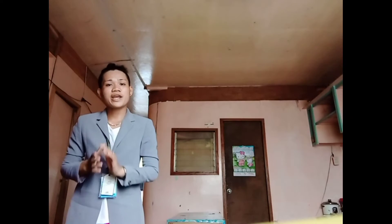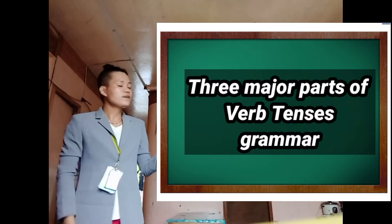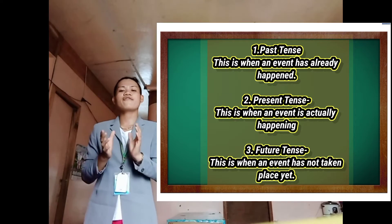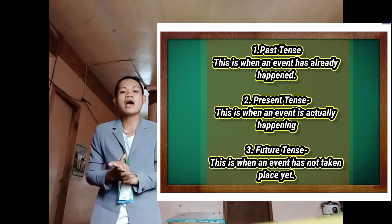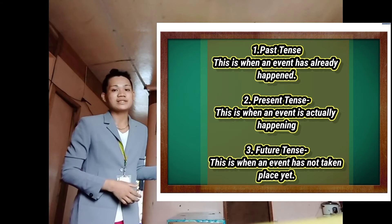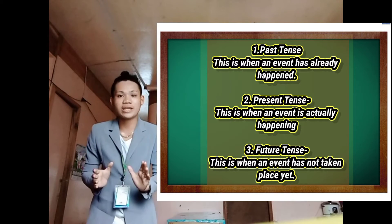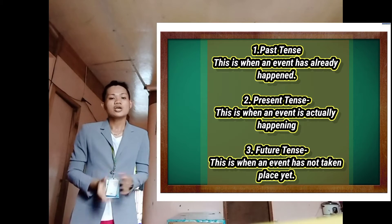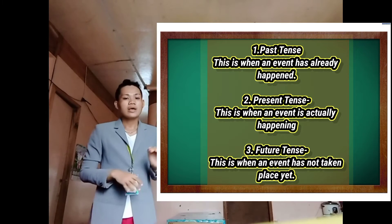Okay class, here are the three major parts of verb tenses. The first one is the past tense — this is when an event has already happened, for example: the researcher explained the unusual result. The second one is the present tense — this is when an event is actually happening. The last one is the future tense — this is when an event has not taken place yet.